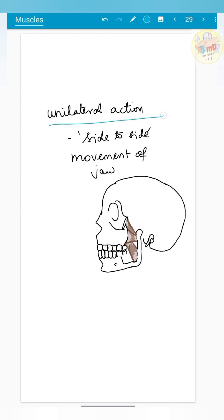With unilateral action — when either the right or the left lateral pterygoid muscle alone works — it causes side-to-side movement of the jaw.